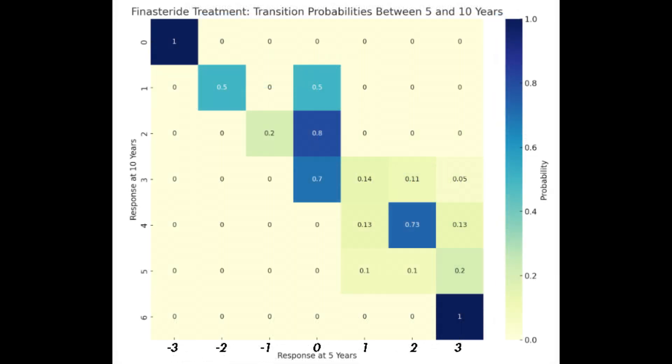We need to understand what these colors mean. Darker blue indicates higher probabilities of the afflicted male pattern baldness individual's condition remaining stable or improving from year 5 to year 10.